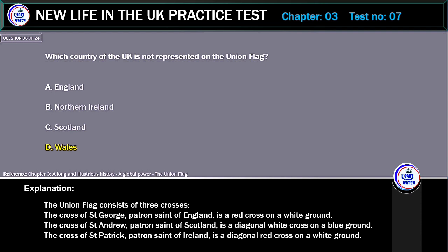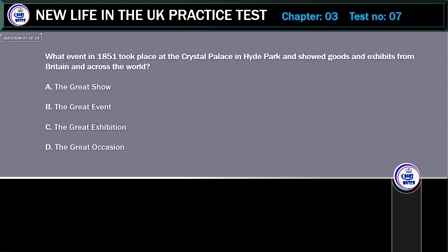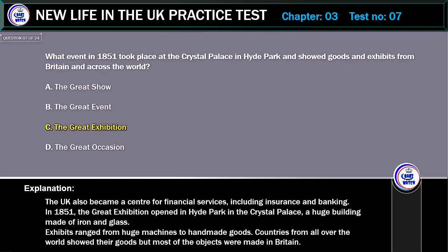What event in 1851 took place at the Crystal Palace in Hyde Park and showed goods and exhibits from Britain and across the world? A. The Great Show. B. The Great Event. C. The Great Exhibition. D. The Great Occasion. Correct answer: The Great Exhibition.